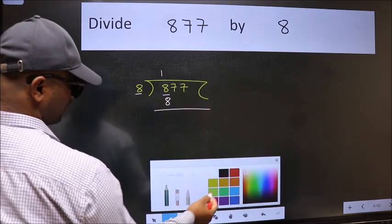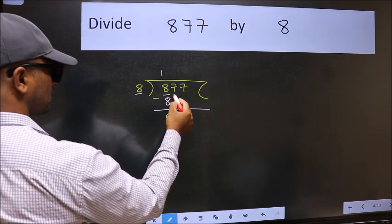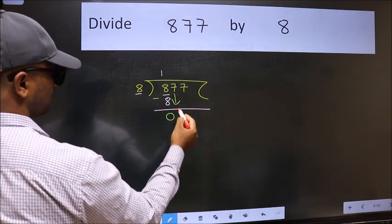Now we should subtract. We get 0. After this bring down the beside number. So 7 down.